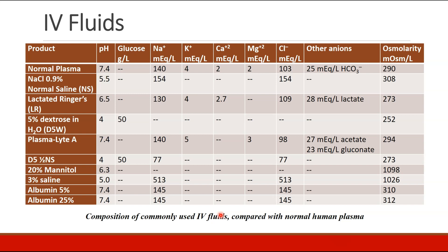This chart describes all of the common fluids we use. It starts with normal plasma with our typical pH, electrolyte composition, and osmolarity. Then it gives for comparison sodium chloride, lactated Ringers, D5 water, and Plasmalyte — all crystalloids we may commonly see used. We also have D5 half-normal saline, some hypertonic solutions like mannitol and saline, and finally albumin, which we'll discuss shortly.